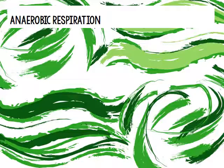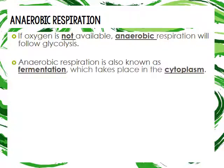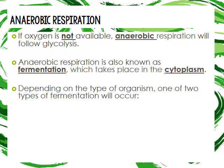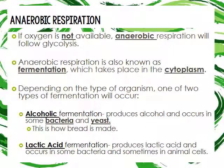For anaerobic respiration, if oxygen isn't available, fermentation follows glycolysis. Fermentation takes place in the cytoplasm. Depending on the organism, one of two types occurs: alcoholic fermentation, which produces alcohol and occurs in bacteria and yeast — this is how bread is made; or lactic acid fermentation, which produces lactic acid in some bacteria and sometimes in animal cells.